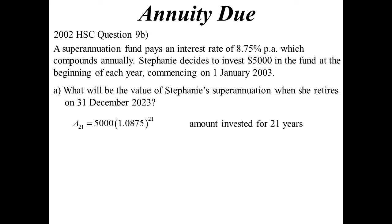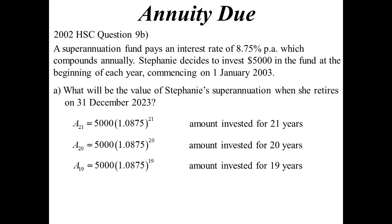That initial amount she puts in — $5,000 — is invested for 21 years. It's essentially just a compound interest question: 1.0875 to the power of 21. Next year she invests another $5,000, but that will only be in there for 20 years. Then the year after that, another $5,000 for 19 years, and so on, until the last investment of $5,000, which is in there for one year. This is why with an annuity due it's invested at the start of the compounding period.